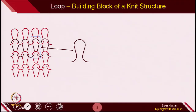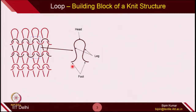Some basic terms in knitting are quite popular around the world. The first one is related to the loop. A loop is the fundamental building block for any knit structure. If you enlarge one loop from the fabric, you can easily differentiate its components. The first component is the head, which is the top circular arc. Apart from the head, there are two straight segments called legs. And at the bottom part, you have two foot segments. Combining two feet, two legs, and one head, we create one building block of a knitted structure — the loop.